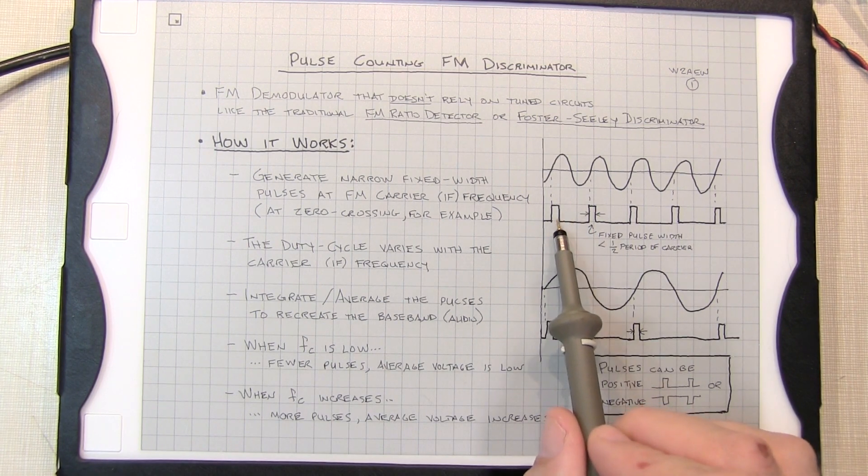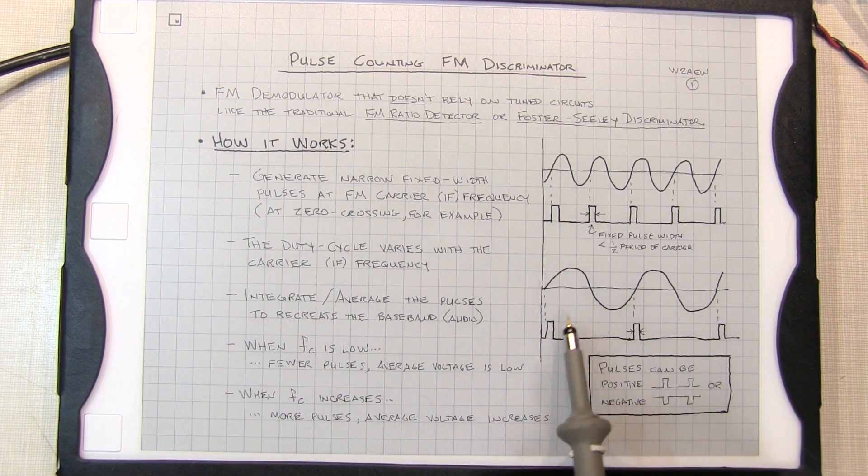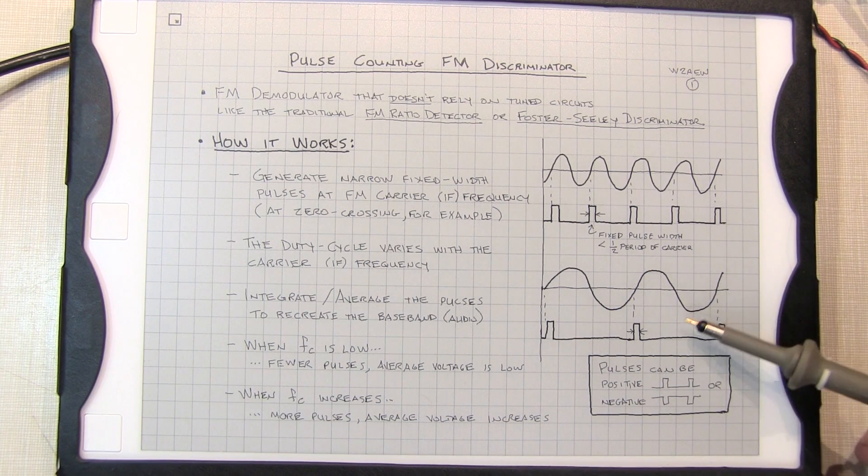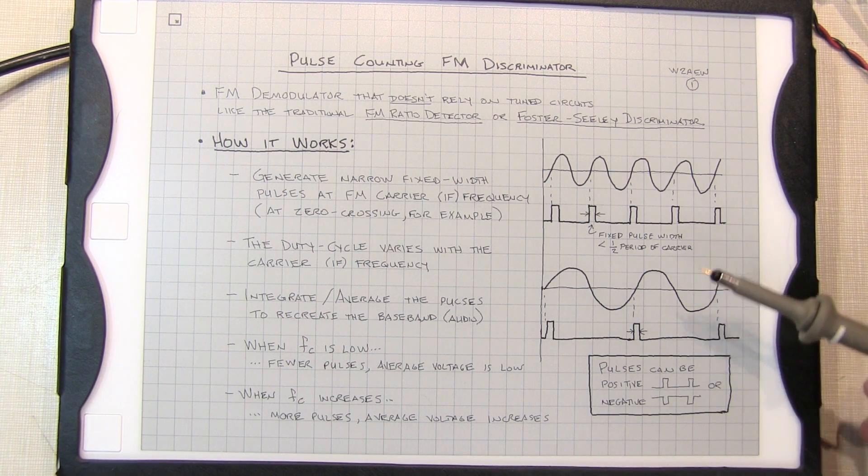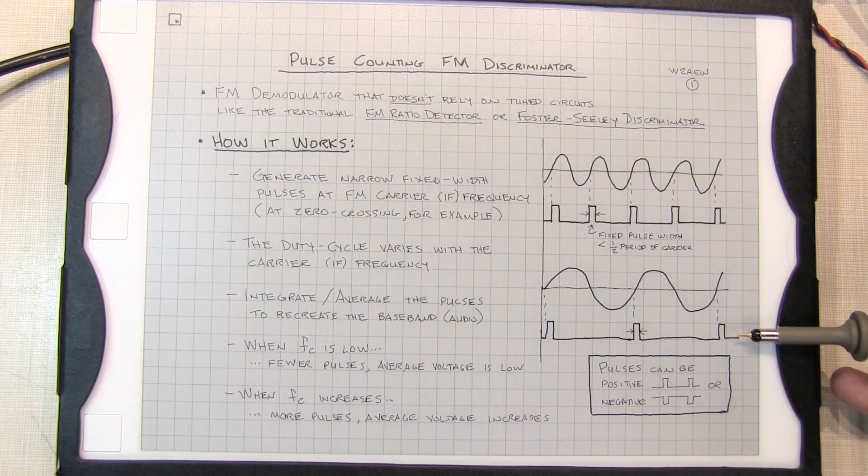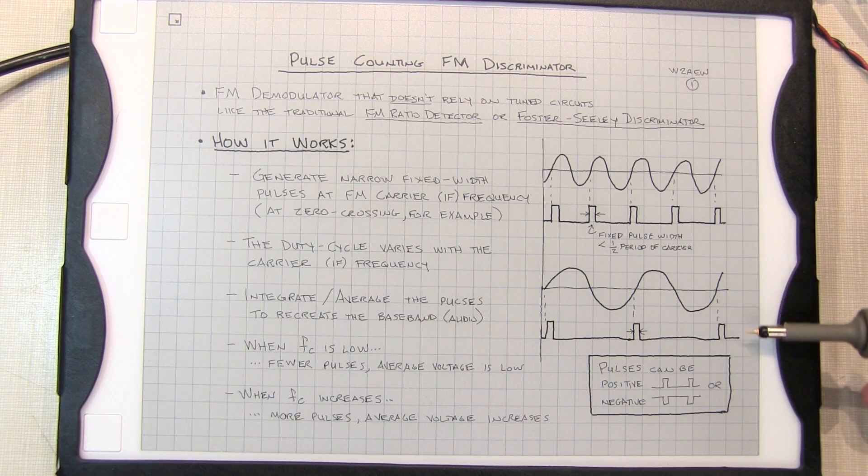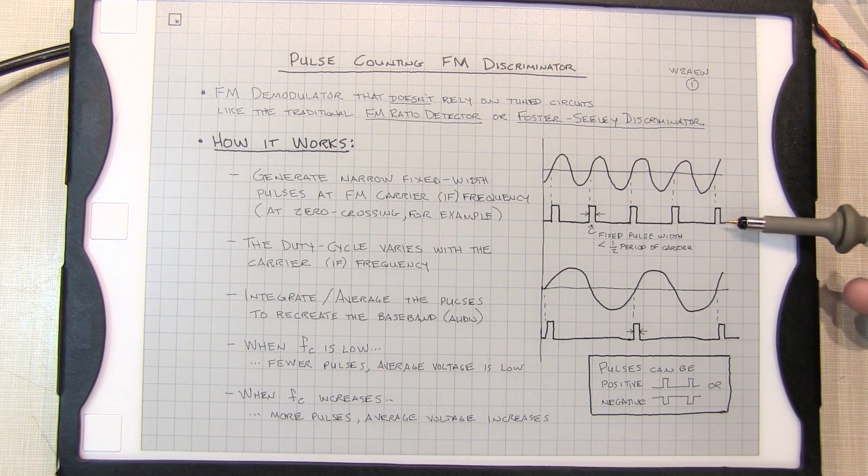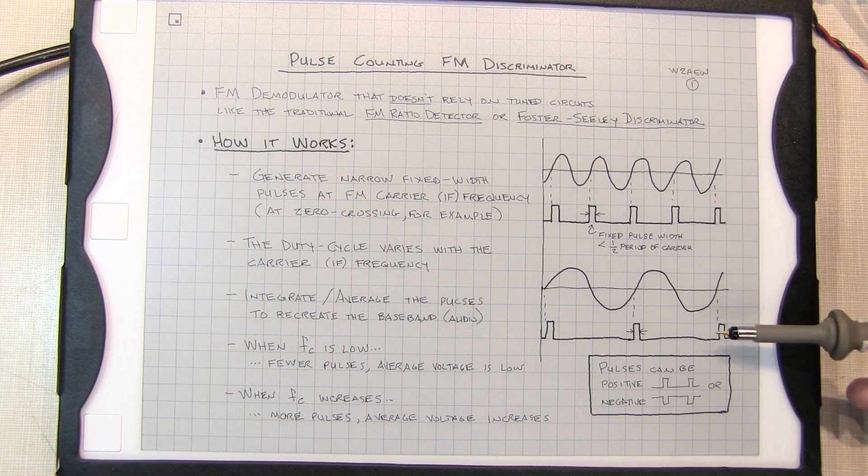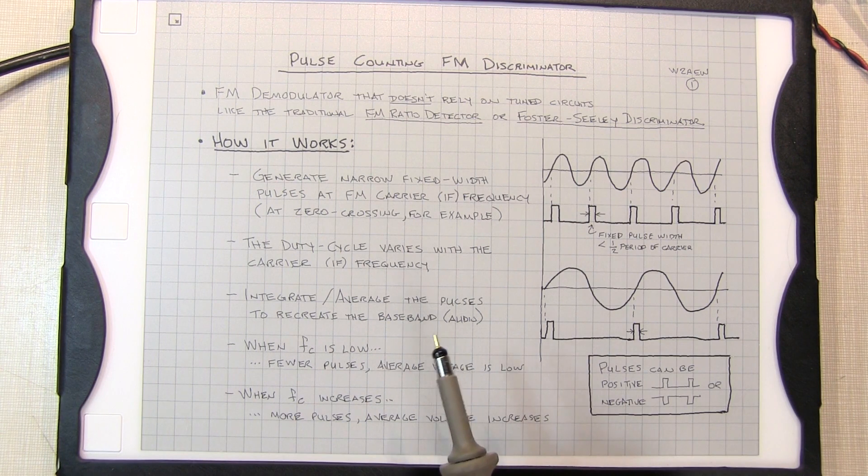Now because the width of this pulse is fixed, as the carrier frequency changes the duty cycle on the pulse changes. So therefore if we average this voltage over time, this one will have a lower average voltage, this will have a higher average voltage. So now the average voltage of this pulse train or the duty cycle of the pulse train changes depending on the deviation of the carrier frequency.